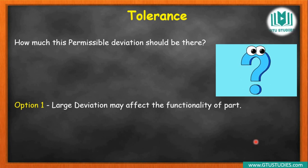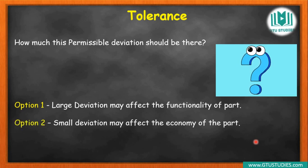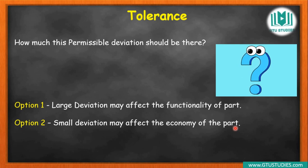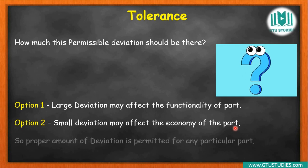Option one is large deviation. If you have a large deviation, you cannot keep quality and functionality — because the required functionality is 56 mm but the component is very different, so large deviation is not possible. Option two is small deviation. If you have a very small deviation, then all products are the same size perfectly, but this requires very high technology machinery and increases the unit cost. So neither very large nor very small deviation can be kept. A perfect deviation must be defined — the permitted amount of deviation for a particular part.